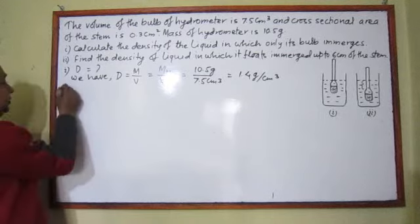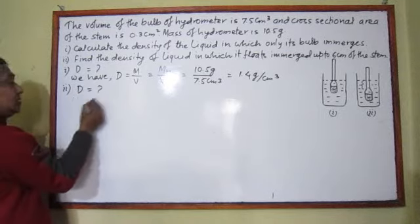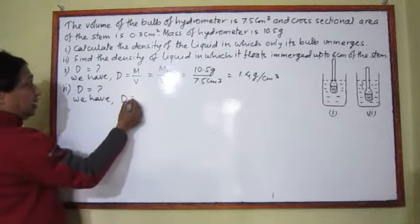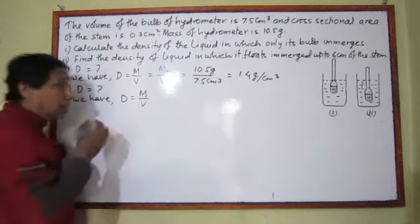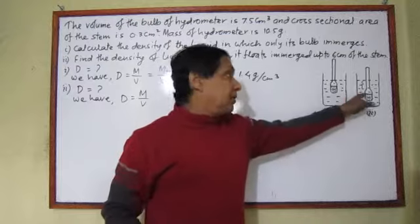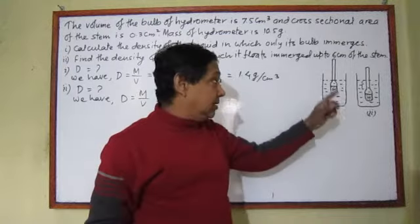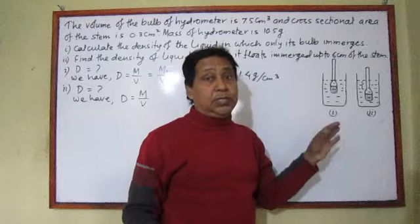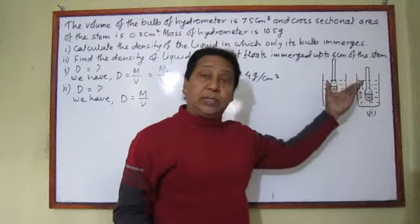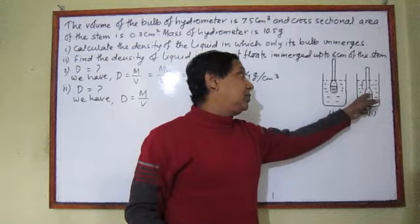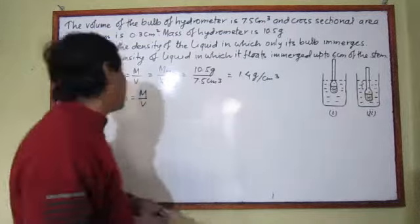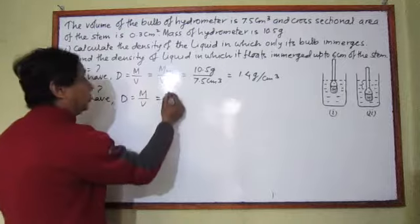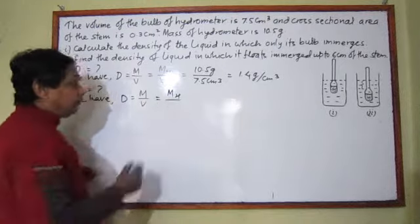Now, second question. Again, density is asked. We have the same formula: density equals mass by volume. Here, mass of displaced liquid is again equal to the mass of the hydrometer, because the principle of floatation says weight of displaced liquid equals weight of floating body. So, the mass of the floating hydrometer equals mass of displaced liquid, and in the second case also, we can take the mass of hydrometer.